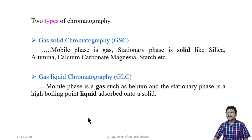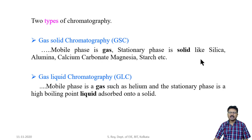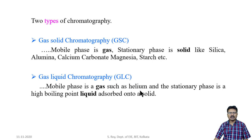There are two types of gas chromatography: one is gas-solid chromatography, another one is gas-liquid chromatography. For gas-solid chromatography, the mobile phase is gas — normally an inert gas — and the stationary phase is solid like silica, alumina, calcium carbonate, magnesia, etc. For gas-liquid chromatography, the mobile phase is gas such as helium, argon, or krypton, and the stationary phase is a high boiling point liquid adsorbed onto a solid.